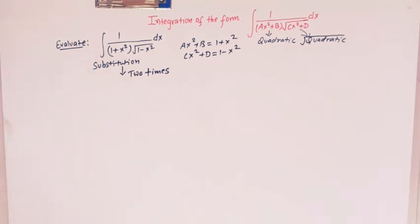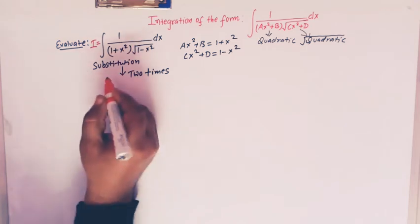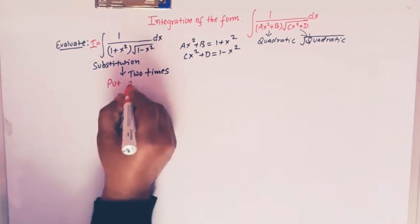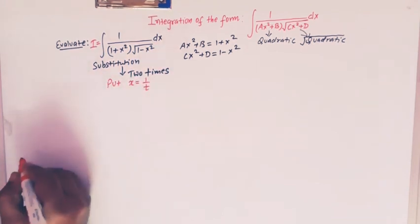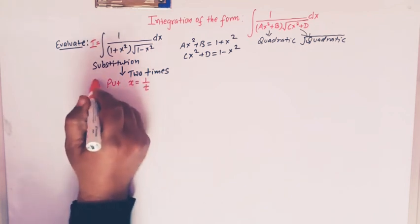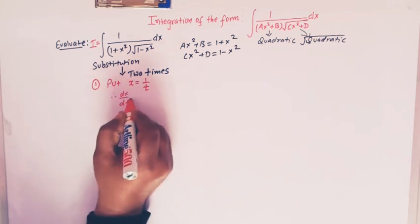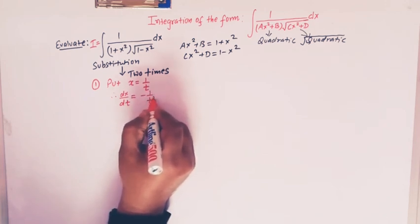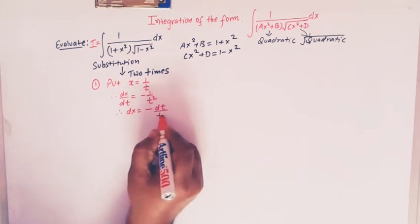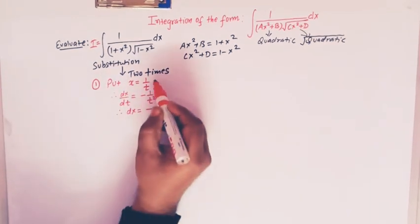Let us start and call this integral as I. The first step of substitution is to put x = 1/t, so we change the variable from x to t. Therefore dx/dt = −1/t², and so dx = −dt/t².